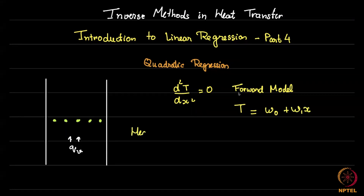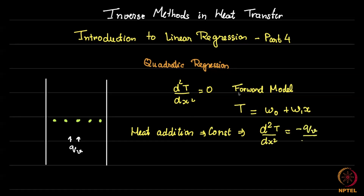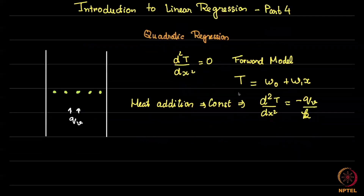Now let's say we have heat addition — and let's say constant heat addition. This would give us something like d²T/dx² equals some heat addition term, so you would have a heat source term on the right-hand side. The solution to this invariably is going to be a quadratic: something like w₀ + w₁x + w₂x².